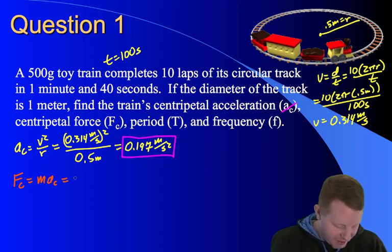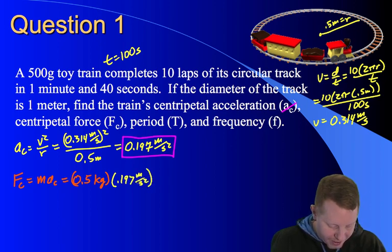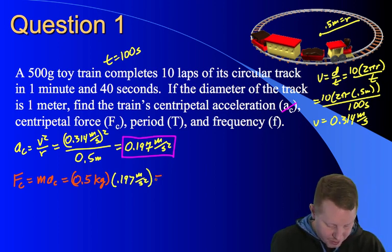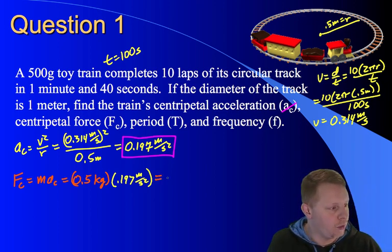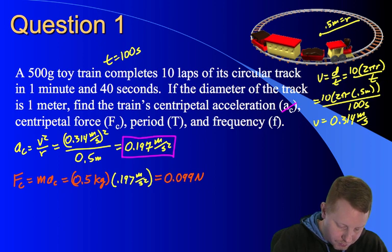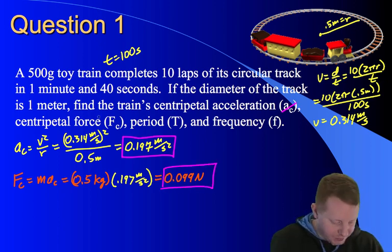500 grams, I can do that one in my head. That's 0.5 kilograms times our centripetal acceleration, which we just calculated as 0.197 meters per second squared. So half of 0.197 meters per second squared is going to give us our centripetal force, which is right around 0.099 newtons. Excellent.